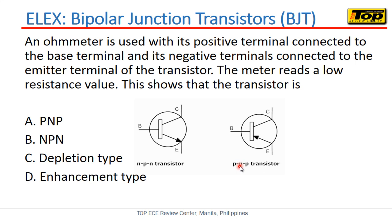There's a mnemonic for this. If the arrow of the emitter is pointing inward, that is PNP. If the arrow is pointing outward, that is NPN. Some say 'Not Pointing iN' for NPN, and 'Pointing iN Please' for PNP — though I prefer to rephrase it to avoid confusion. The key point is that an NPN or PNP transistor BJT is a 2 PN-junction device.